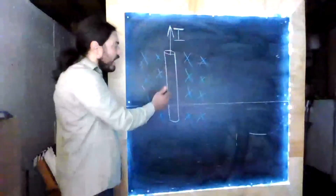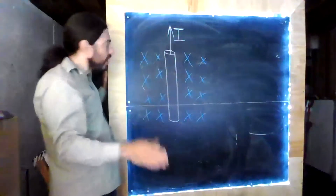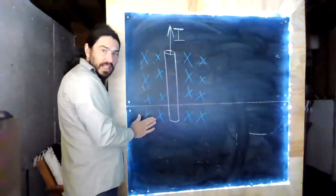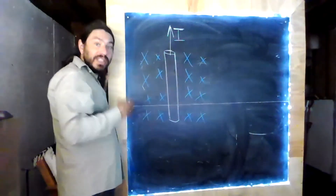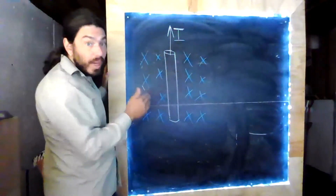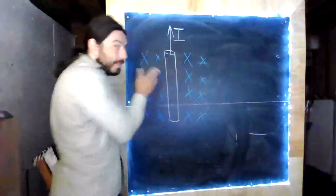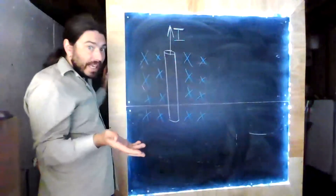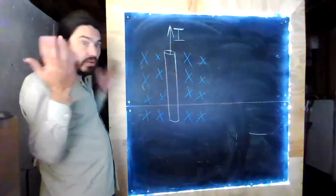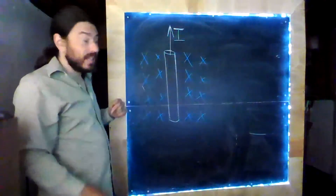Here I have a wire in an external magnetic field. Now we need to be careful. These blue X's do not represent the magnetic field due to the wire — because, of course, a current-carrying wire does create a magnetic field. These blue X's represent some external magnetic field that this wire is living in. I don't know what caused that magnetic field, but it does exist.